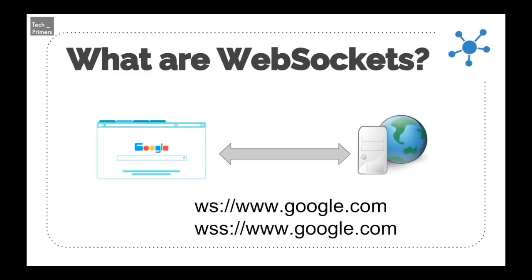Web sockets are created using ws:// — unlike HTTP, web sockets use this format. Whenever you see ws:// in a website, that means it is using web sockets. The difference between the HTTP connection and a web socket is that HTTP is unidirectional — the sender has to trigger a request and will get a response. Web sockets are bi-directional, so the sender can send data and the receiver also can send data.